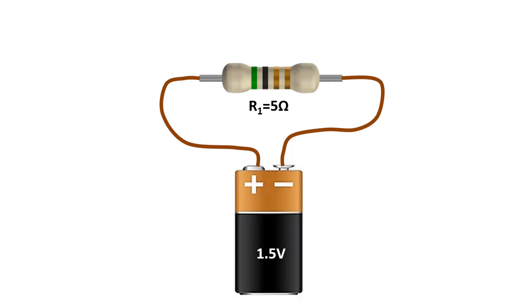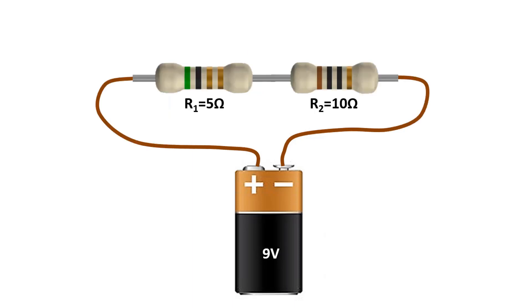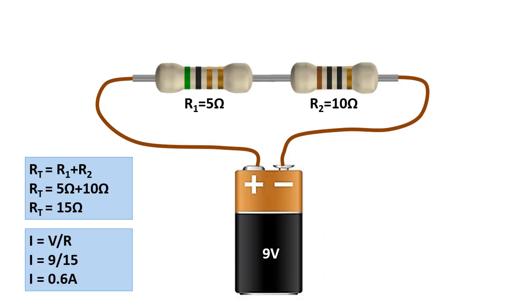Now let's look at how to find the voltage in series connected circuits. If there is only one resistor in the circuit, the voltage across this resistor will be equal to the source voltage. The voltage across this resistor will be 1.5 volts. What if there are two resistors? First, we need to calculate the total resistance. Here, the total resistance value is 15 ohms from the sum of 5 ohms plus 10 ohms. The current value is 0.6 amps from 9 volts divided by 15 ohms.